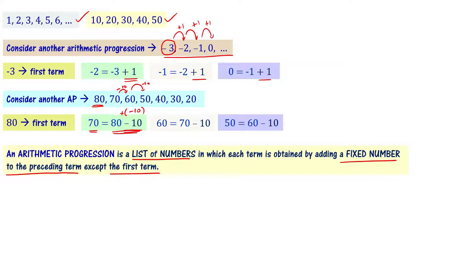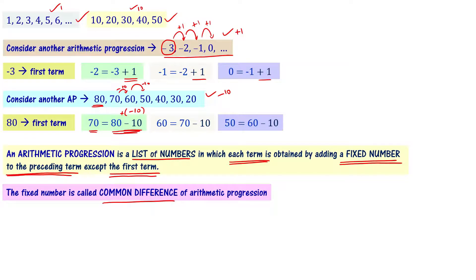An arithmetic progression is a list of numbers in which each term is obtained by adding a fixed number to the preceding term, except the first term. This rule is applicable to all terms except the first term. The fixed number is called the common difference of the arithmetic progression.